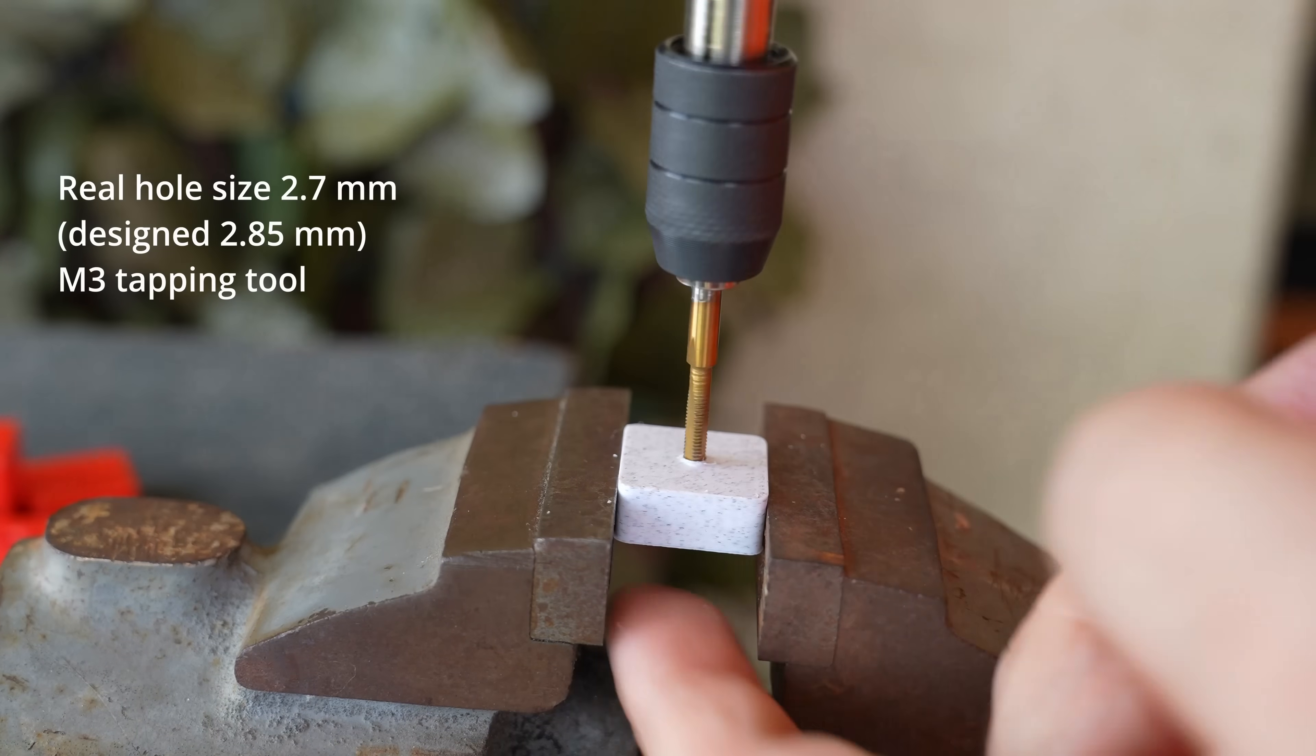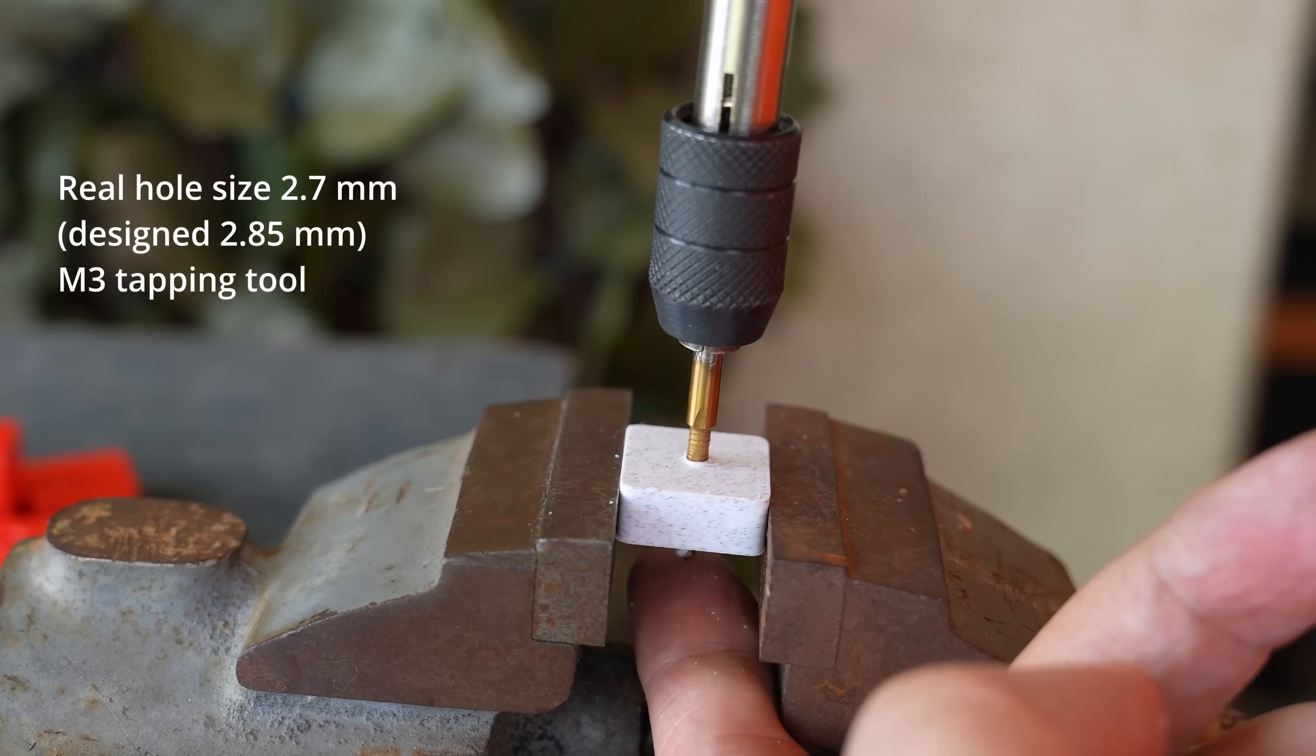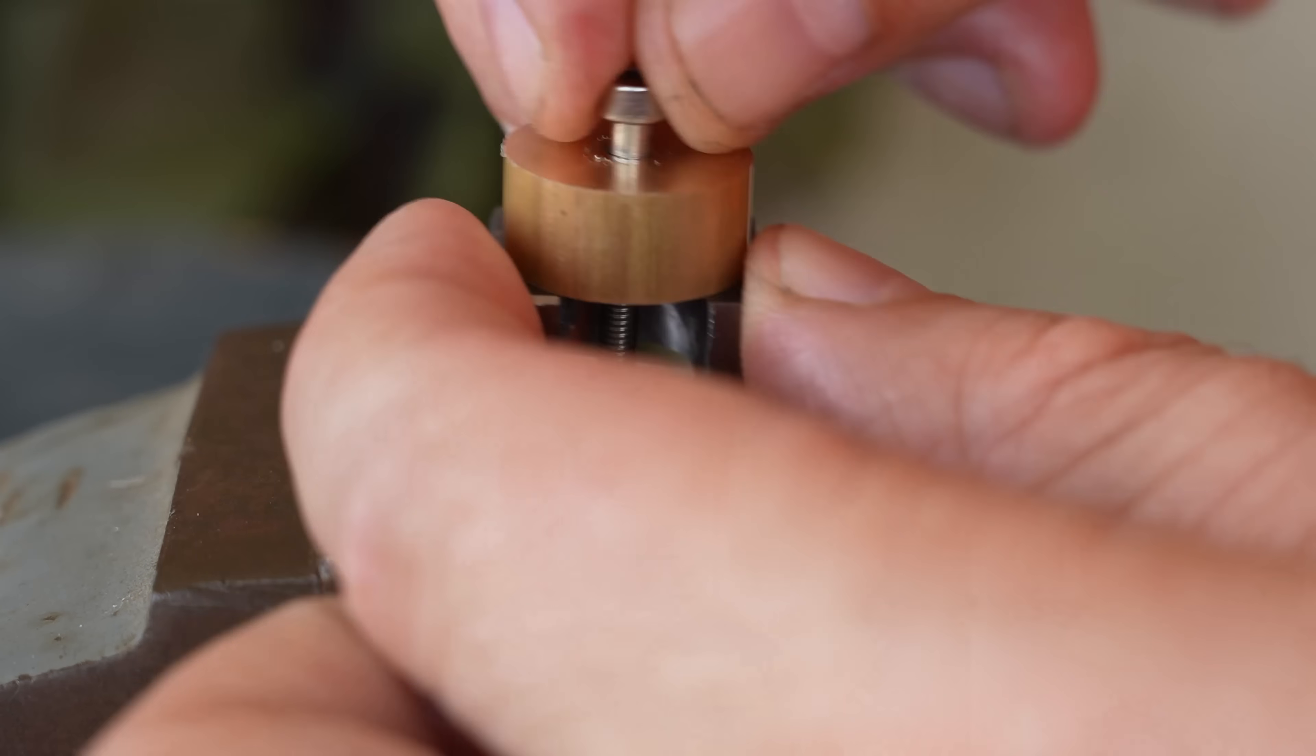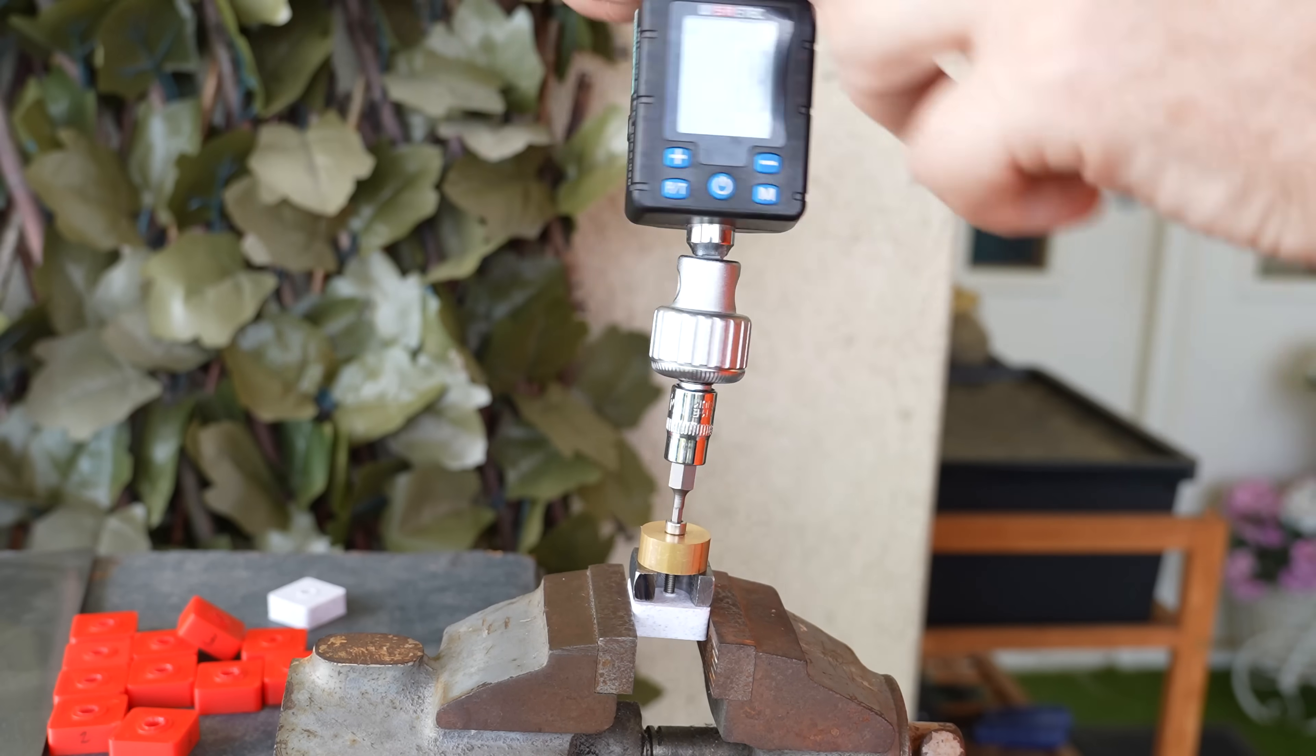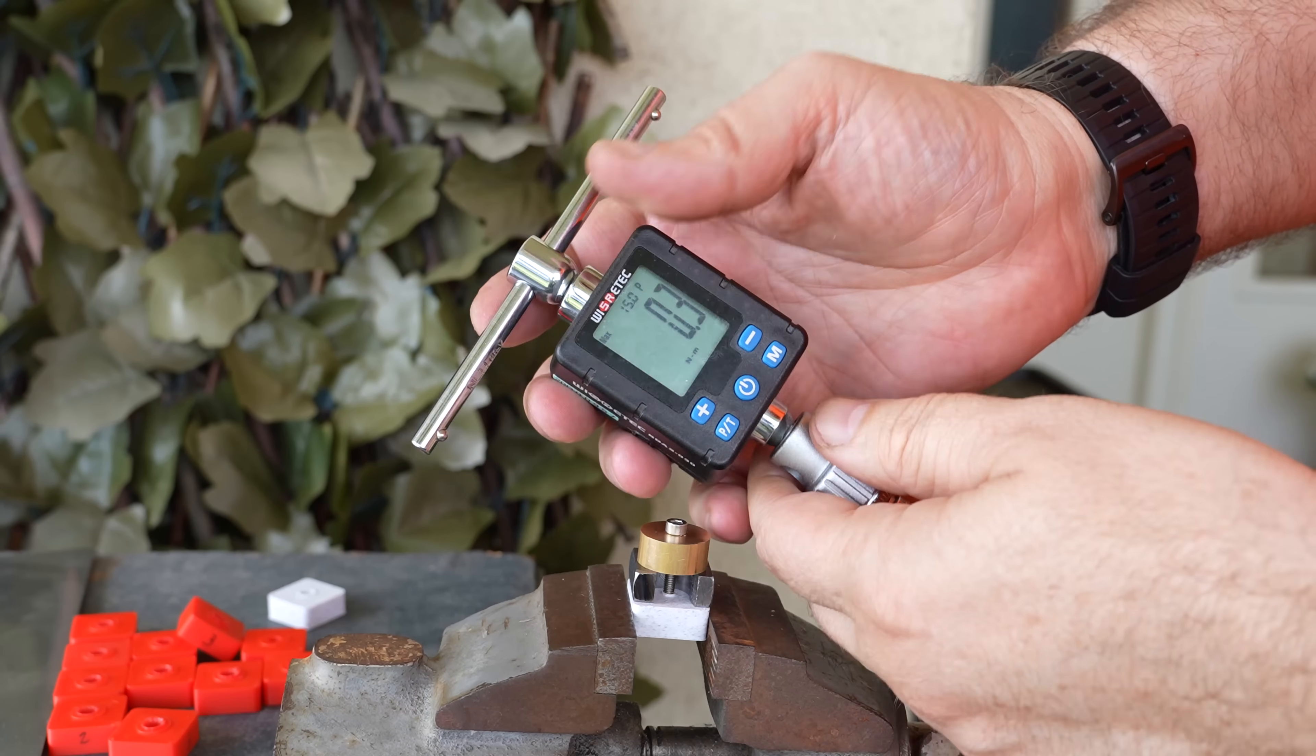Two more bonus tests. Let's say we print a hole and with the tap tool we cut the thread into it. Thread cut into the plastic. I'm using this method very often but only with bigger threads. 0.3 Nm.